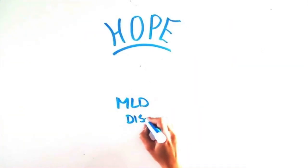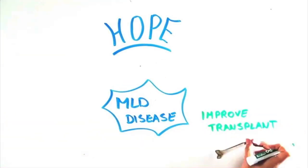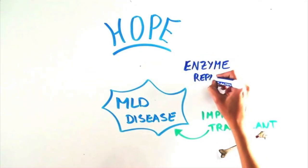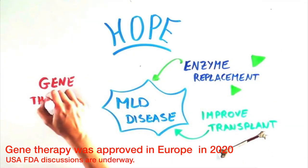But there is hope. In addition to ongoing slow improvements in transplant, clinical trials and research is underway to study at least four other approaches to managing MLD's ravages. Enzyme replacement therapy and gene therapy are the furthest along in their trials.